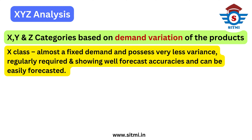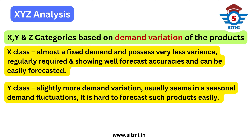X class products show well forecast accuracies and can be easily forecasted. On the other side, Y class products show slightly more variance in demand compared to X class items and there are significant up and down trends. Y class can also include seasonal demand products, which is why they show much more demand variation compared to X class, and it is very hard to forecast such products easily.